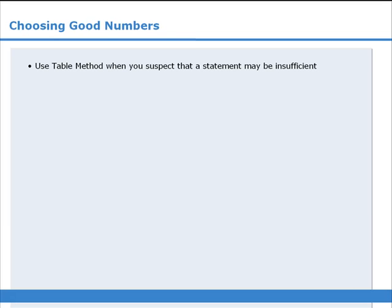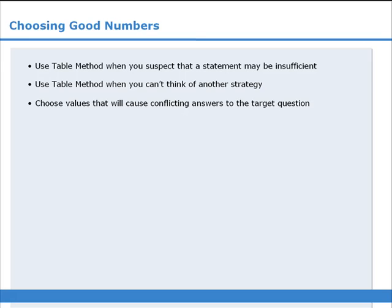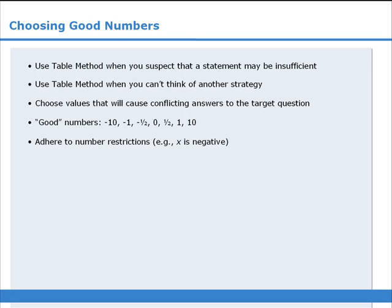To summarize: the table method can be useful if you suspect that a statement may be insufficient. If you aren't sure how to solve a data sufficiency question, the table method may help provide insight into whether a statement is sufficient. When using the table method, your goal is to choose values that cause conflicting answers to the target question. When looking for good numbers, consider the ones discussed. Finally, be sure to adhere to any restrictions regarding the numbers you are allowed to use.